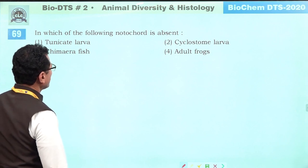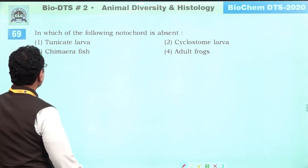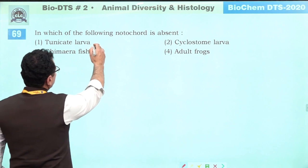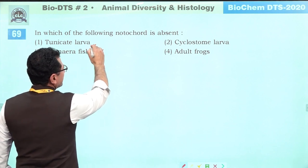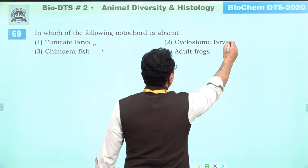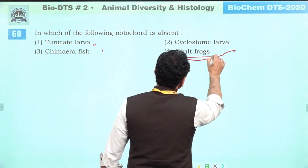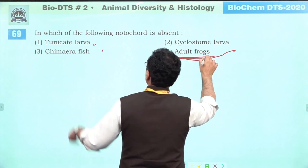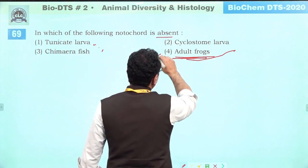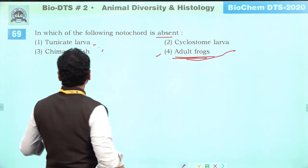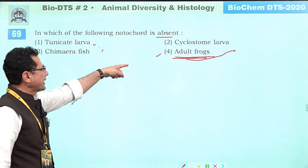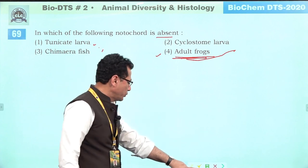In which animal is notochord absent? Notochord is present in tunicate larvae. Notochord is present in cyclostome larvae. Adult frogs do not have notochord — they have a vertebral column. Chimera also has notochord. Except for adult frogs, all others have notochord. Answer is four.